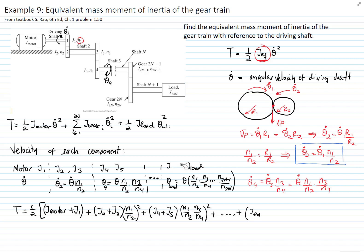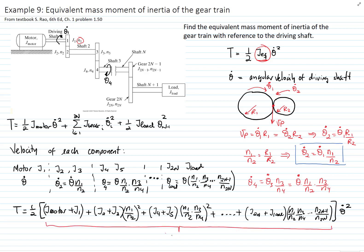So we write the gear 2n term — let me correct that in the table to 2n as well, because it's the gear, not the shaft — and then all the tooth ratio relations to relate the velocity of the load with respect to the velocity of the motor. Finally, everything is multiplied by the angular velocity of the motor squared, and everything inside the bracket is our equivalent mass moment of inertia. So we can write the expression for kinetic energy as one half times that equivalent mass moment of inertia times the angular velocity squared. Therefore, we were able to find the equivalent mass moment of inertia of the gear train.